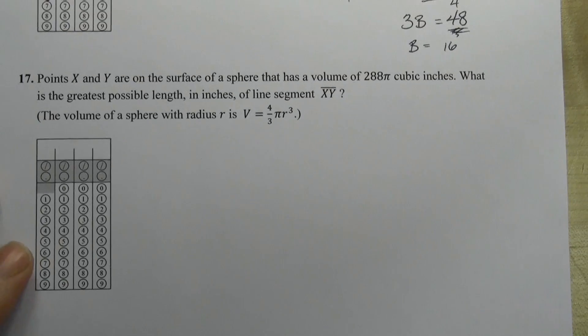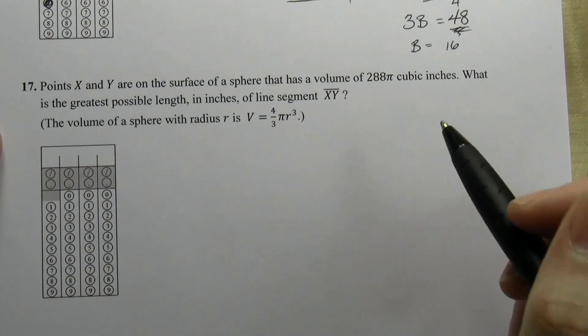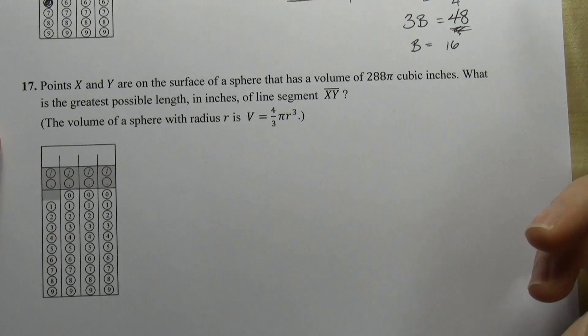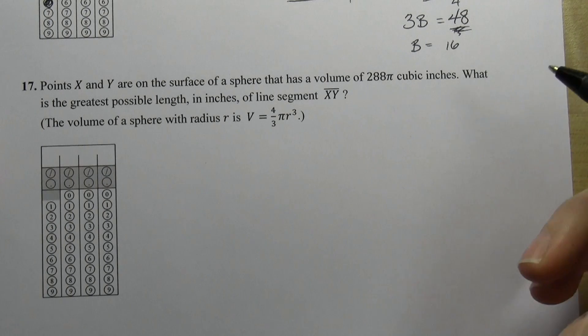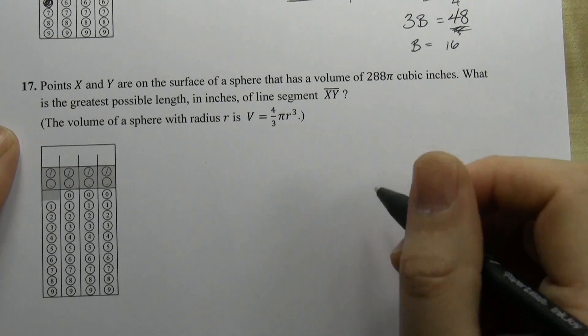Let's try a slightly harder question that requires you to draw your own picture. In this case, they say points X and Y are on the surface of a sphere that has a volume of 288π cubic inches. What is the greatest possible length in inches of the line segment XY?